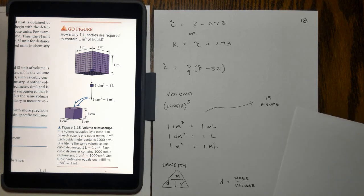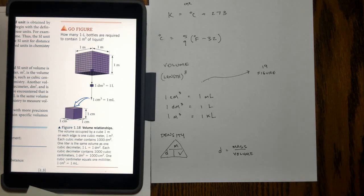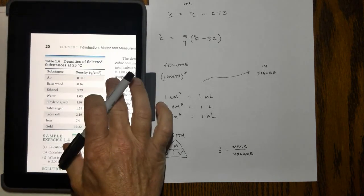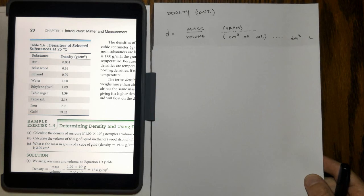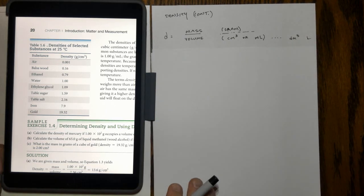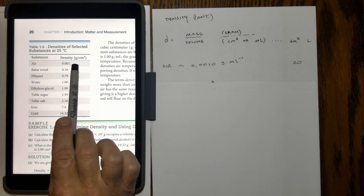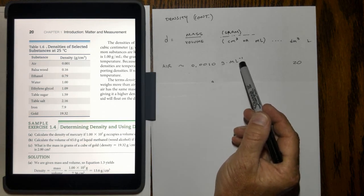The last derived unit we'll talk about is one called density. Density is the division of mass and volume, so mass divided by volume equals density. Density is an intensive property of matter that can be used to identify a substance. You can see some examples of selected densities of substances over here on page 20 in your textbook. Air is not very dense at all, 0.001 gram per cubic centimeter.